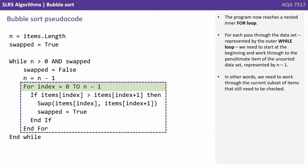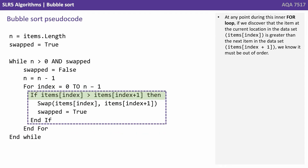The program now reaches a nested inner for loop. For each pass through the data set, represented by the outer while loop, we need to start at the beginning and work through to the penultimate item of the unsorted data set, represented by n-1. In other words, we need to work through the current subset of items that still need checking. At any point during this inner for loop, if we discover that the item at the current location, items[index], is greater than the next item in the data set, items[index+1], we know it must be out of order.